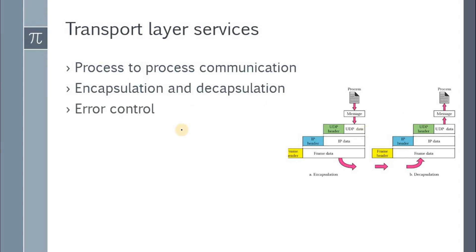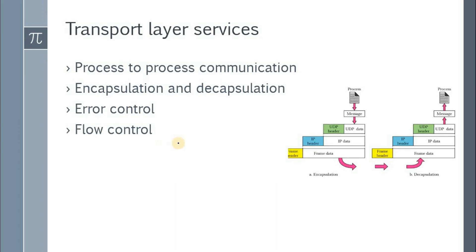The third service is error control. This error control mechanism is implemented using TCP and other protocols. If an error occurs in the delivery of any packet, corrective actions are taken by the transport layer, which we will study in detail in coming lectures.